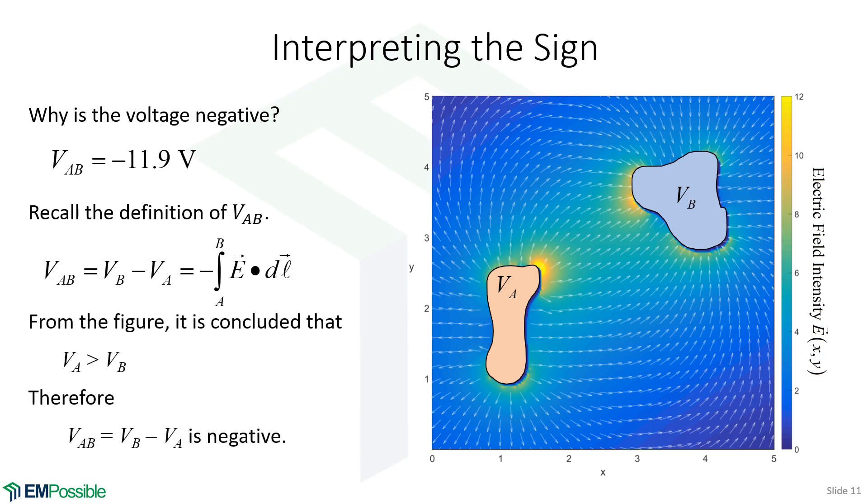So if V_A is the higher potential, the bigger number, so we have small number minus a bigger number, we will get a negative number. And so that's what that is implying. It's simply implying that V_A is the higher potential.